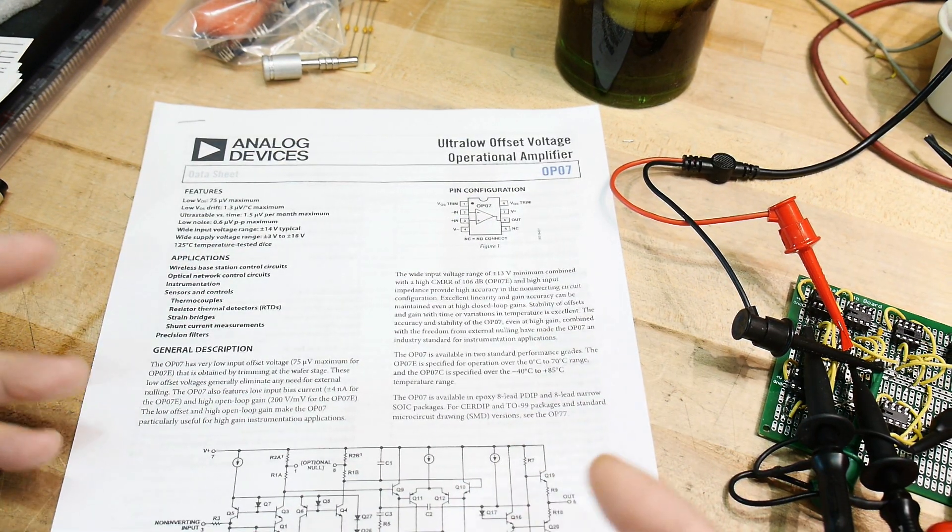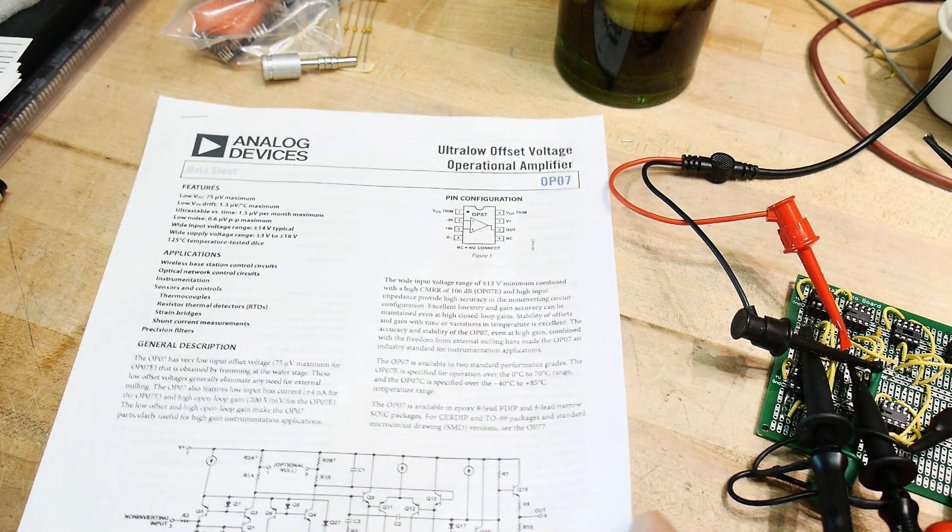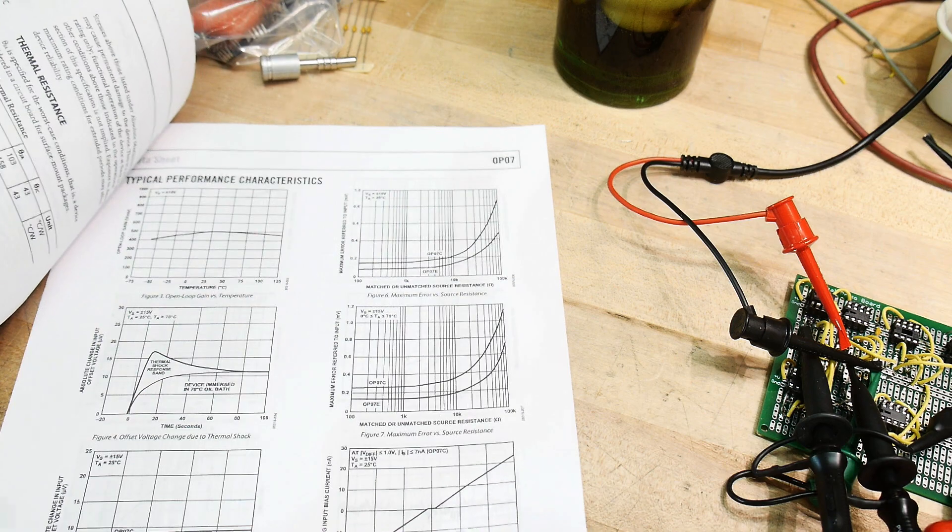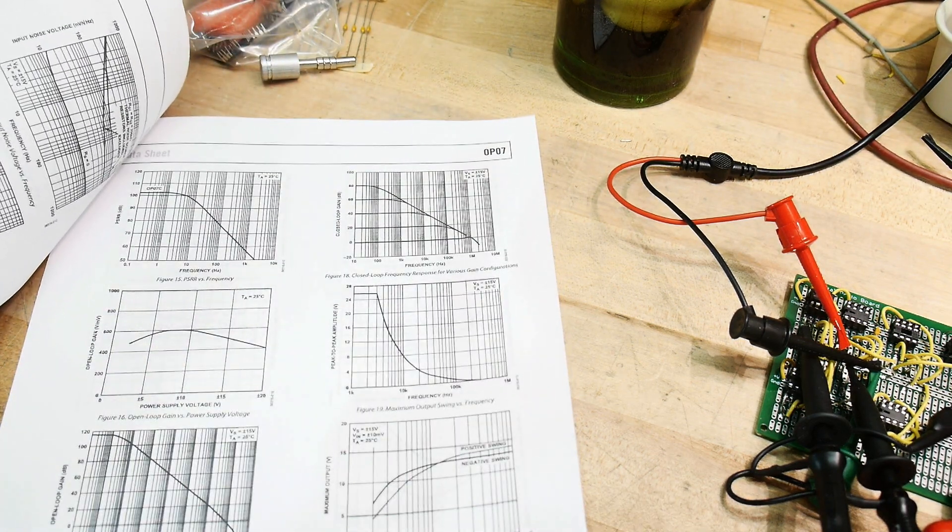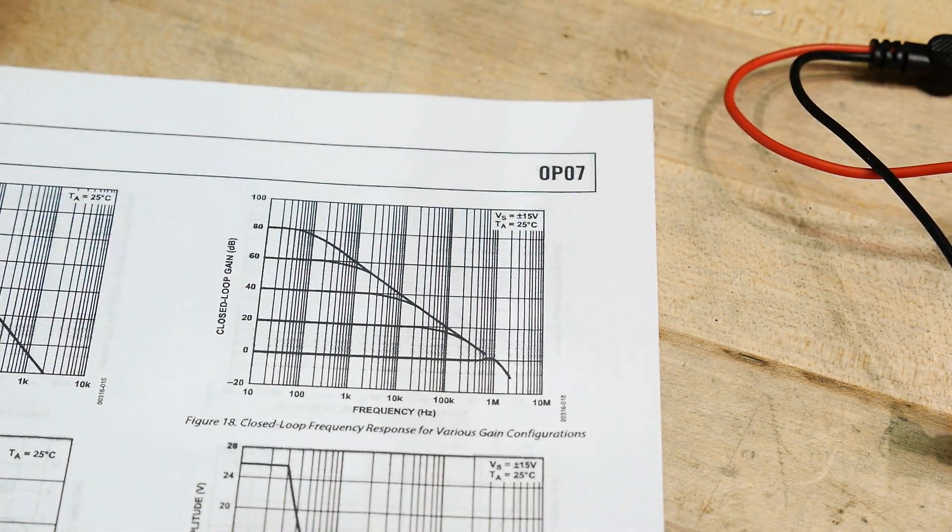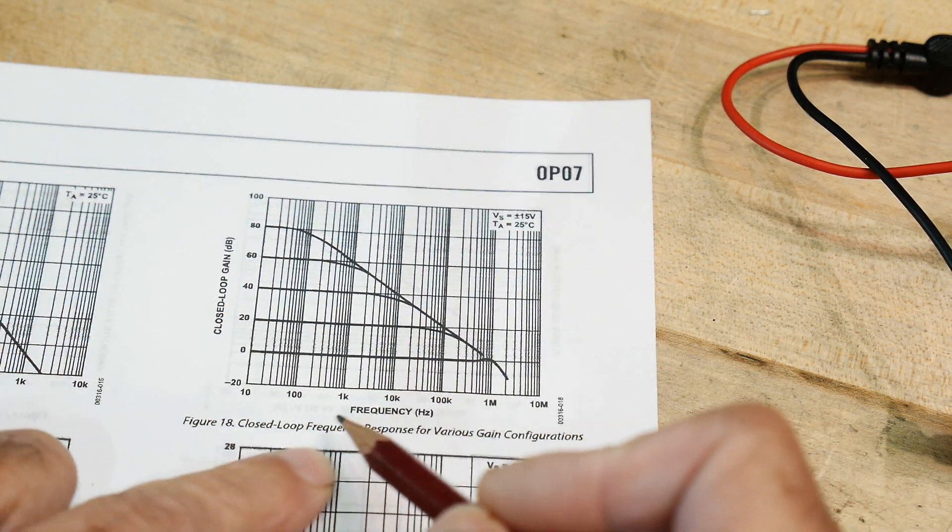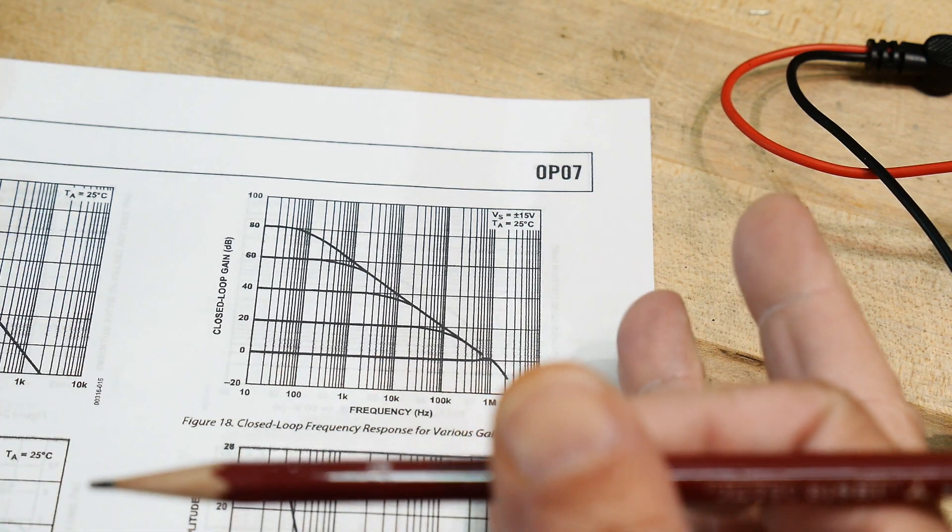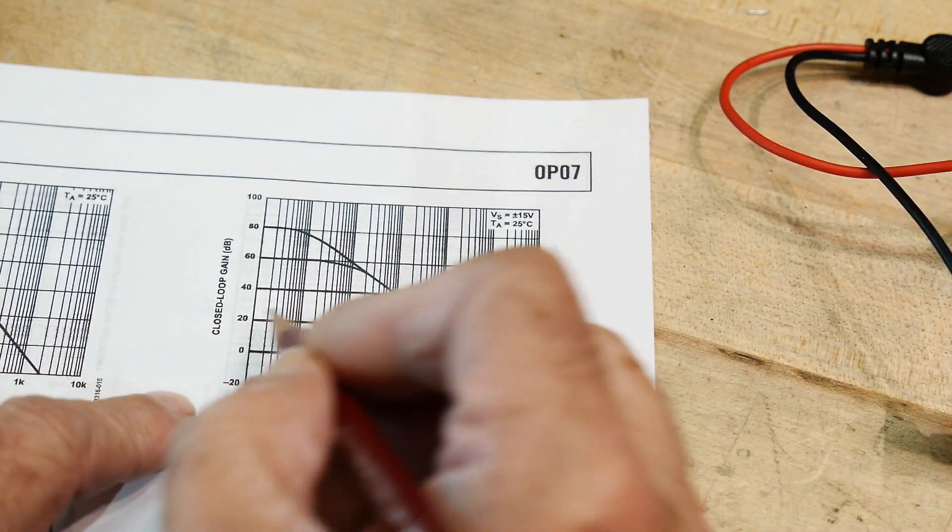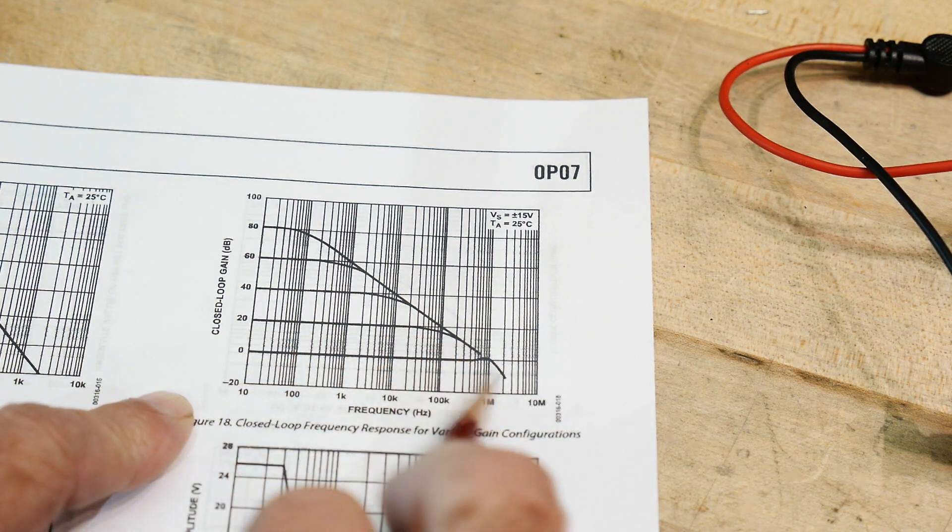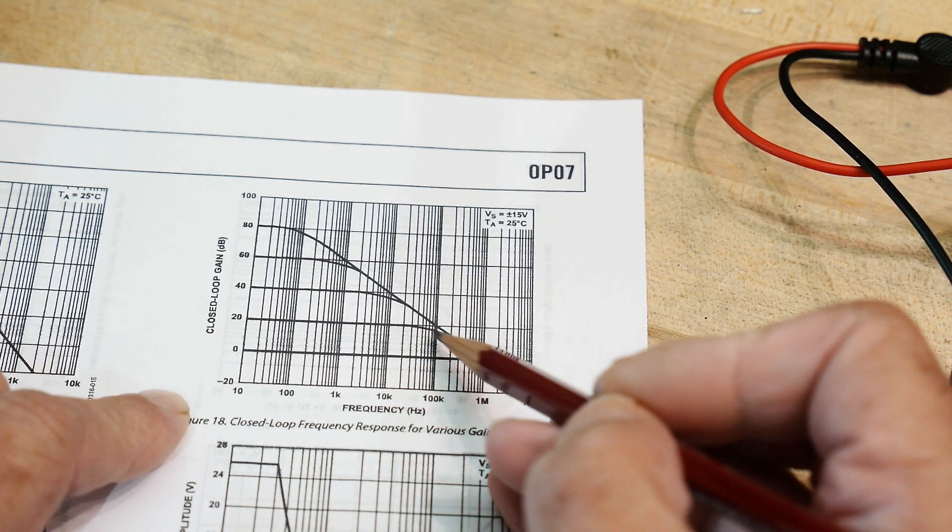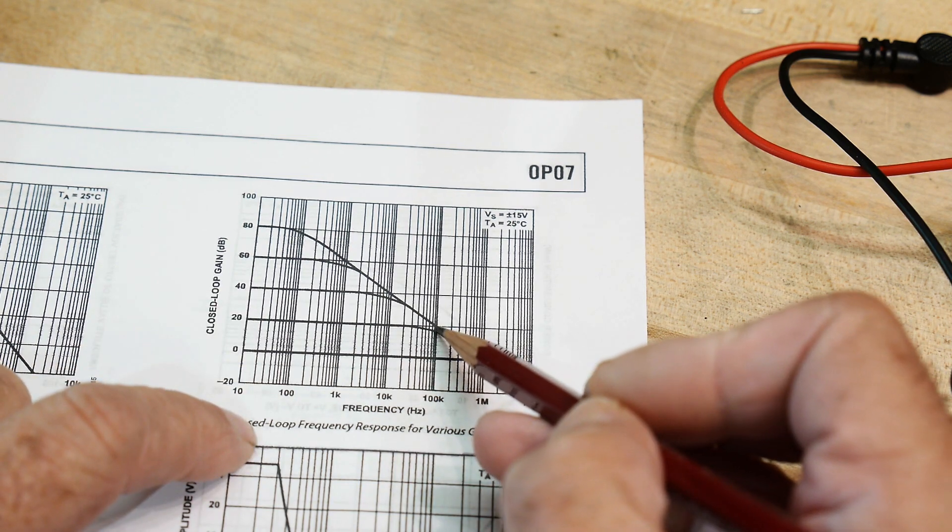All right, so we've just measured a bunch of op-amps. And so here's an OP07 data sheet. Let's see if we can find that measurement in this data sheet. And show you what that's called and what it looks like here. So it's basically this plot here. So this is called the closed loop frequency response for various gain configurations. So we had a gain of 10, right? And these are in dB. So we had a dB gain of 20. So this is the line that we were following. It goes straight across and then it falls. And this one is rolling off around... Oh, it's probably 3 dB down around 100 kilohertz, something like that. Now you can see that at a different gain. So this is a gain of 1, 0 dB.